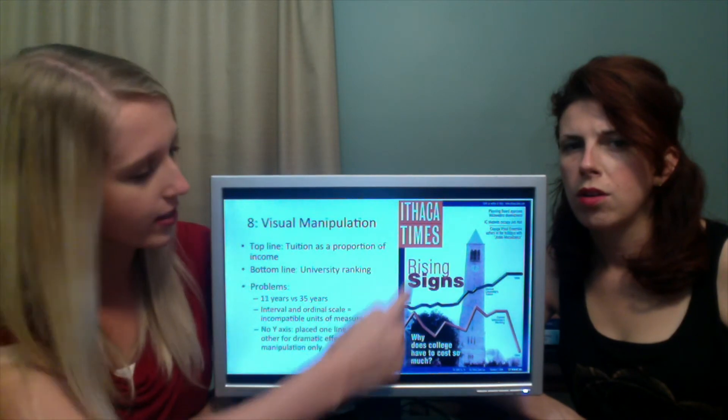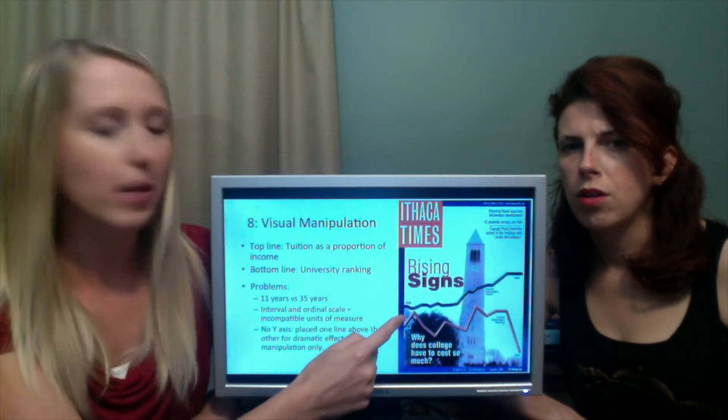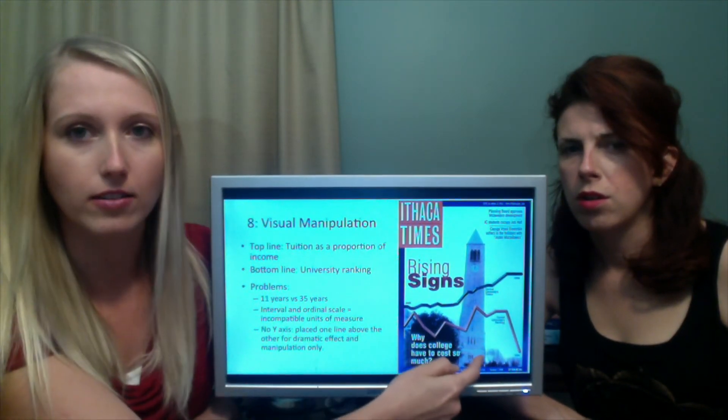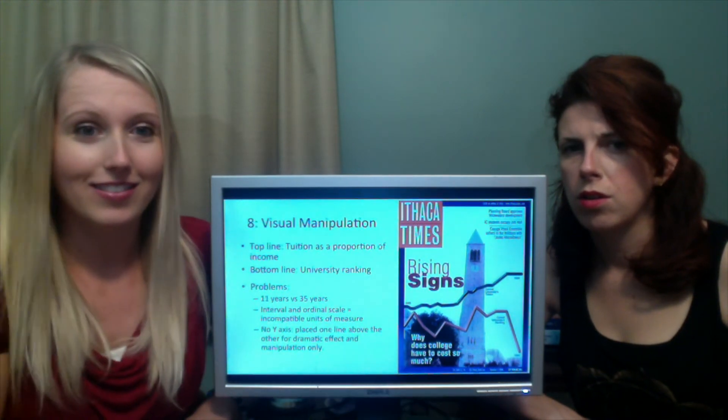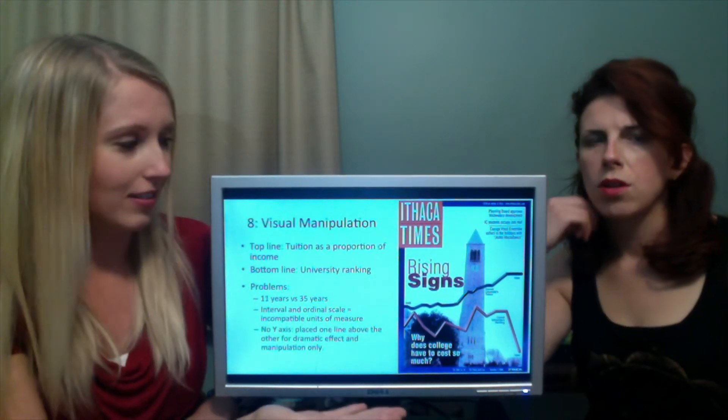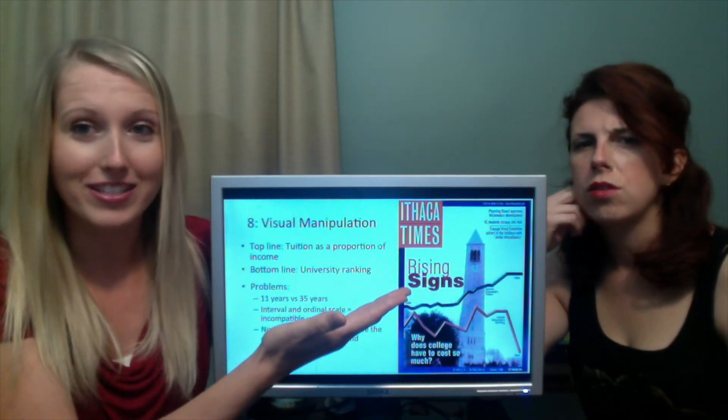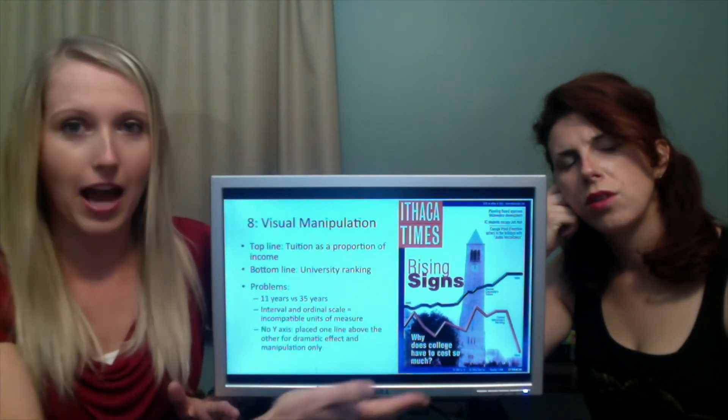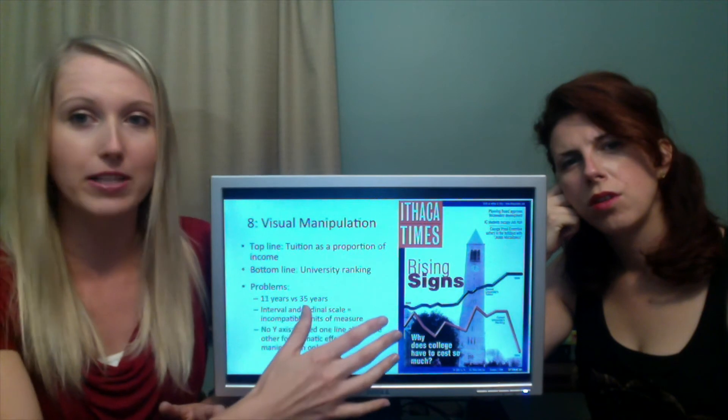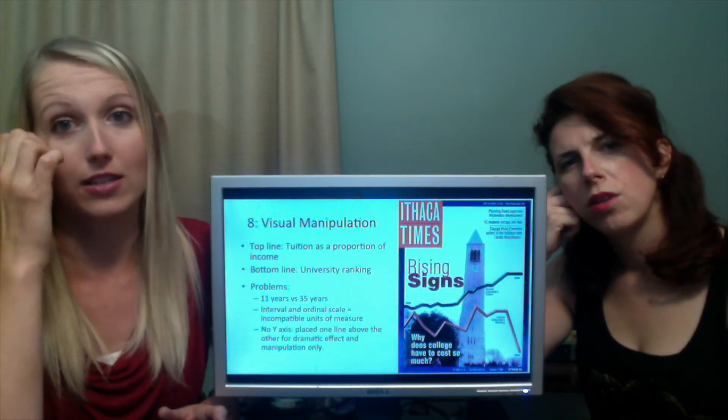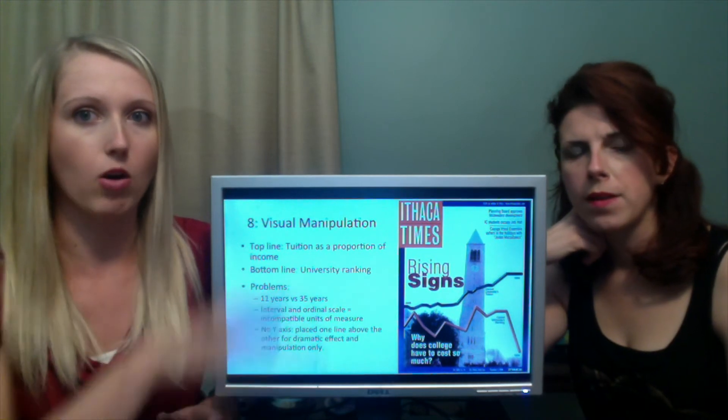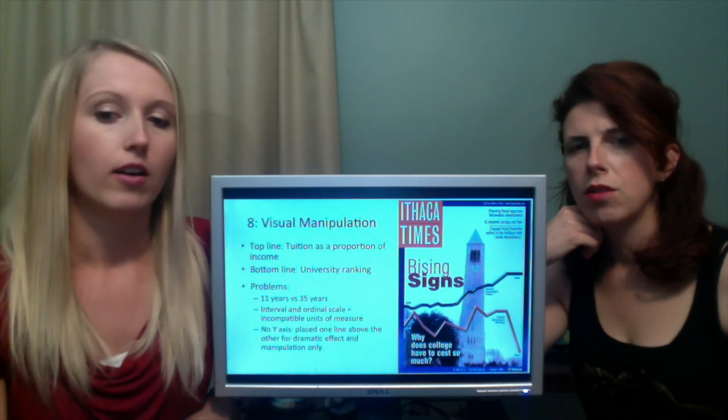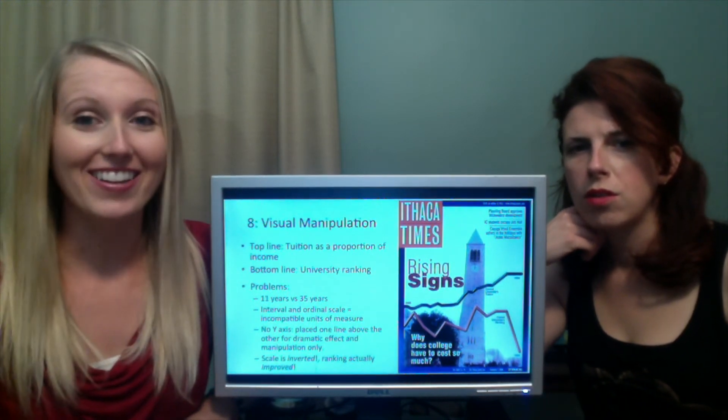Problem number two: interval and ordinal scales. Those are just fancy terms to say they're not measuring in the same way. This is measuring money and this is measuring on a scale of 1 to 5 or 1 to 10. They're not the same. You can't put them on the same scale. Problem number three: there is no y-axis. There is nothing to even measure. The fact that they put the tuition on top and the ranking of the university on the bottom, that just shows that they want you to see what they want you to see.